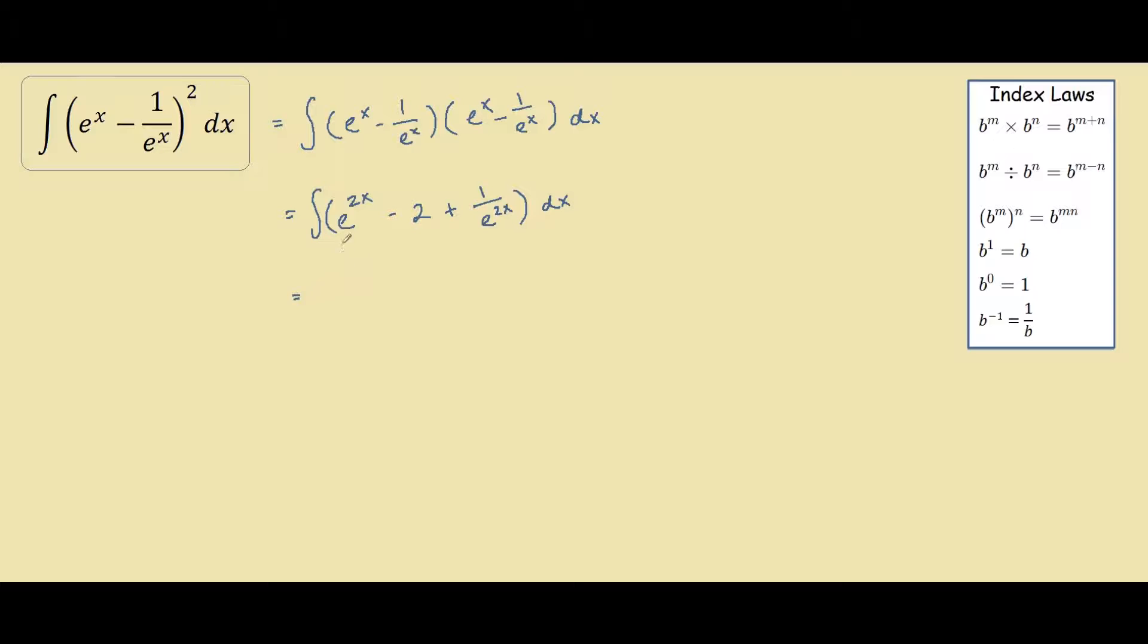To find the integral of e to the power of 2x, you divide by the derivative of the function up here times the original function. So we would have e^(2x) divided by the derivative of the function up here, 2.